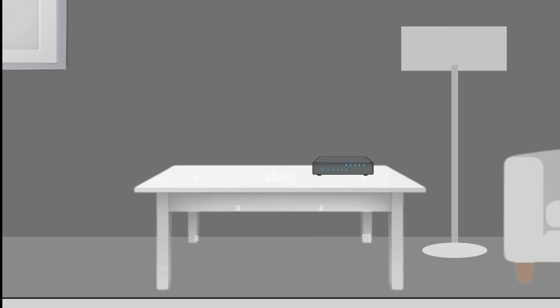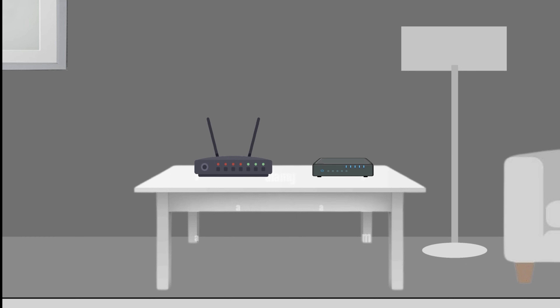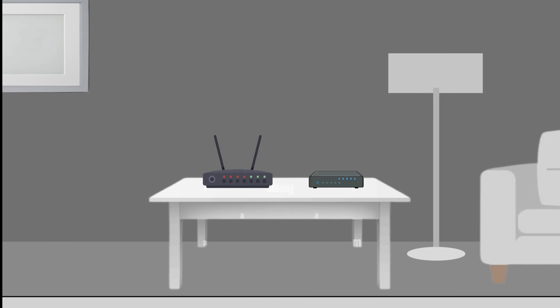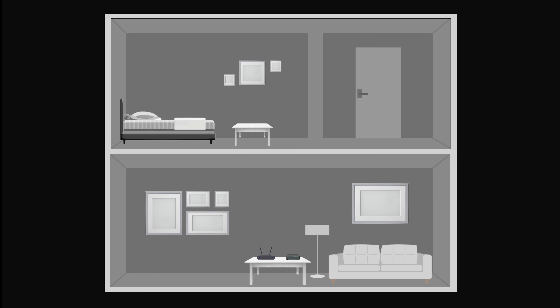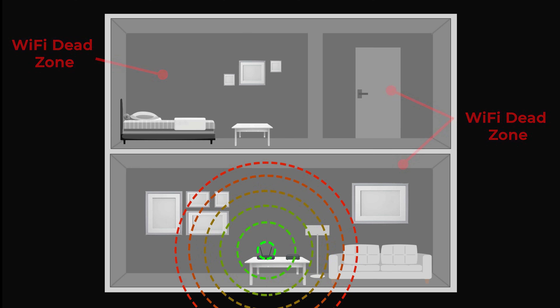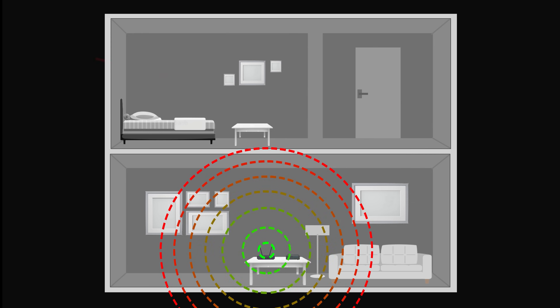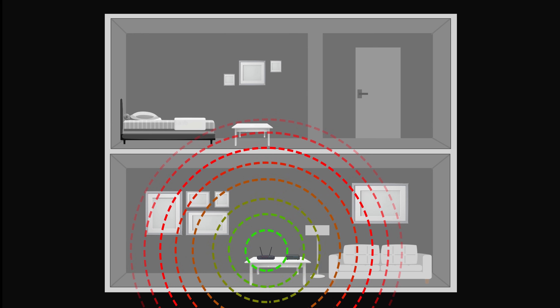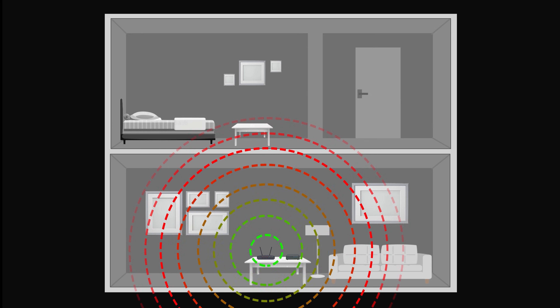There is a modem and a modem plus router. In this setup, we have a range of Wi-Fi coverage. There are Wi-Fi dead zones in this case. The Wi-Fi router connected device has a long connection time. The bandwidth and speed remain the same throughout.